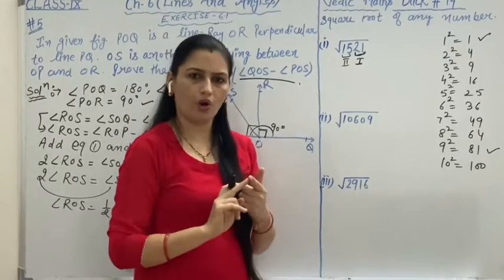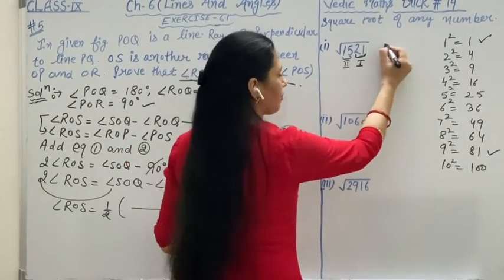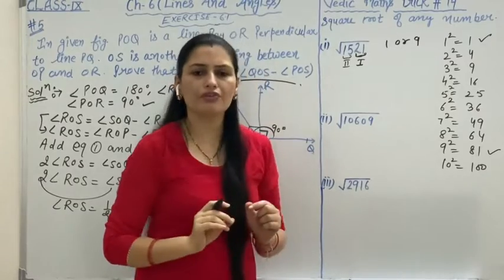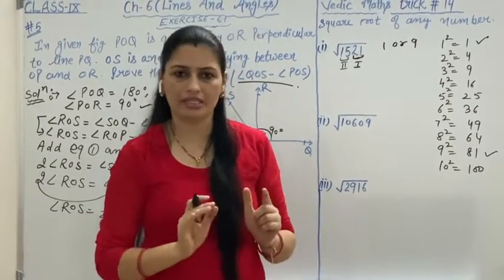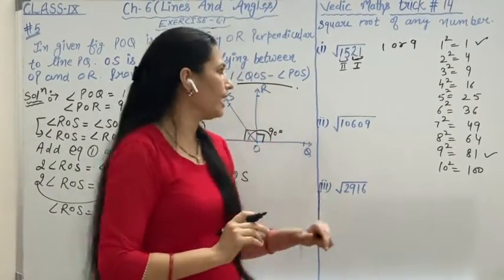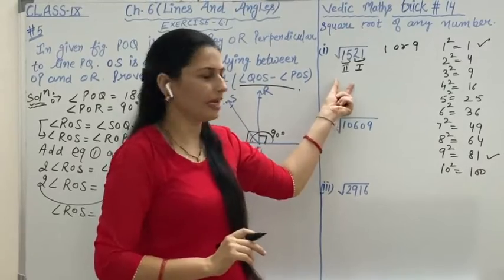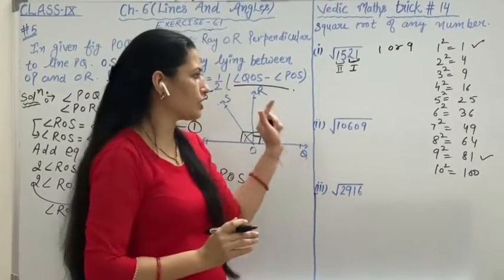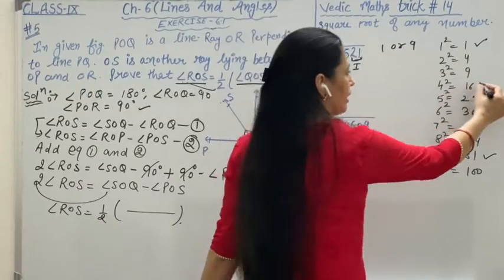In the last you will get either 1 or 9. Now there is confusion whether to take 1 or 9. Your second part will decide. What is the second part? That is 15. So below 15 what can you write? Because 16 we cannot write, because 16 is bigger than 15.